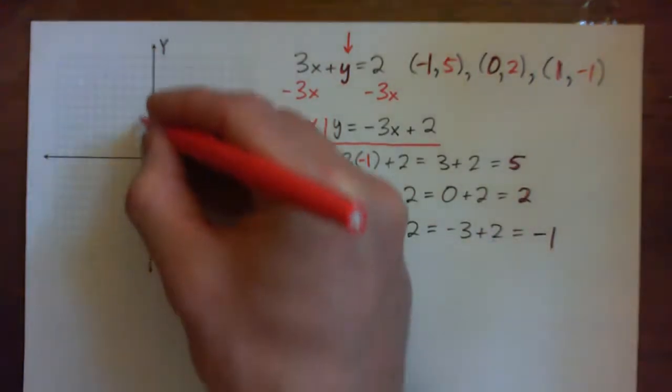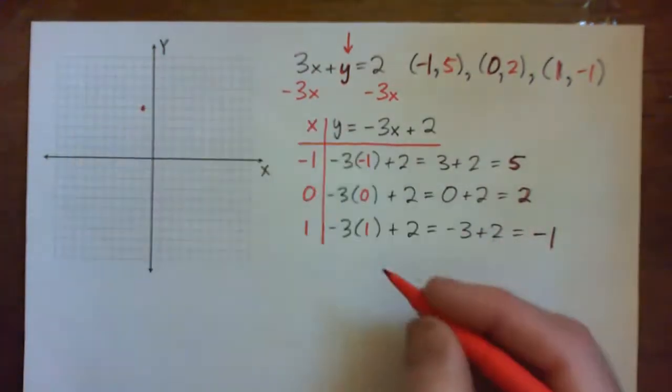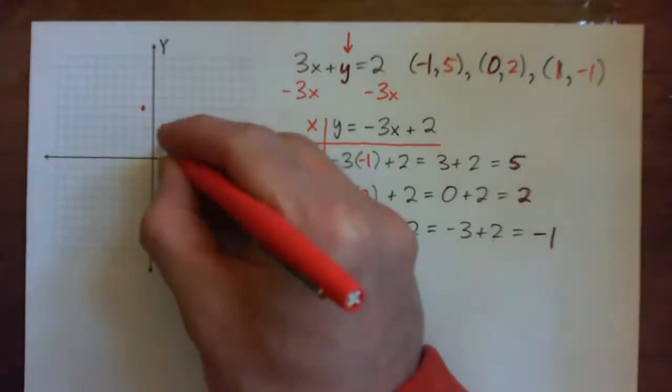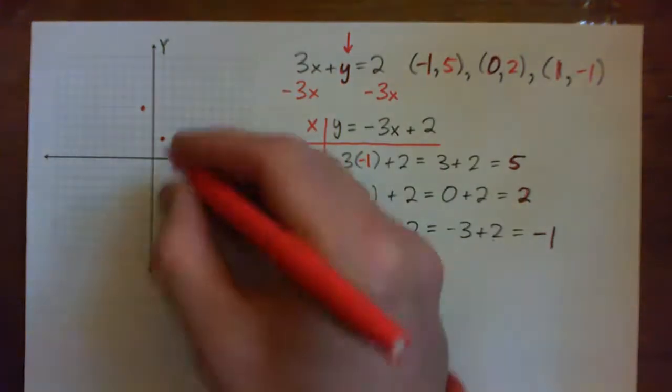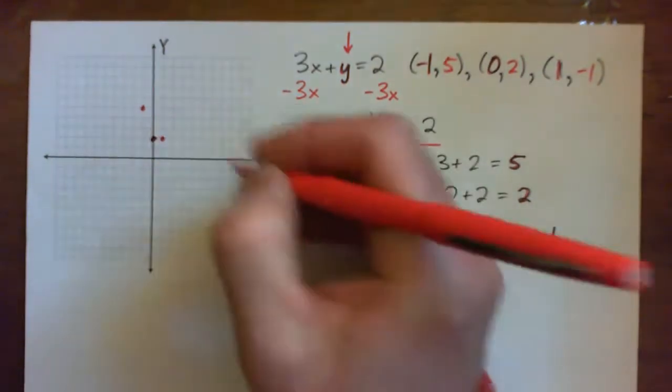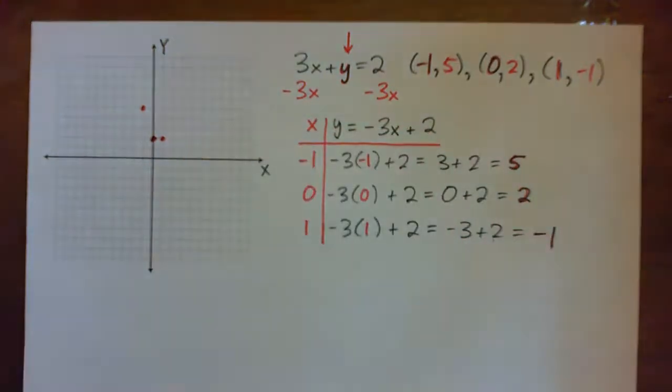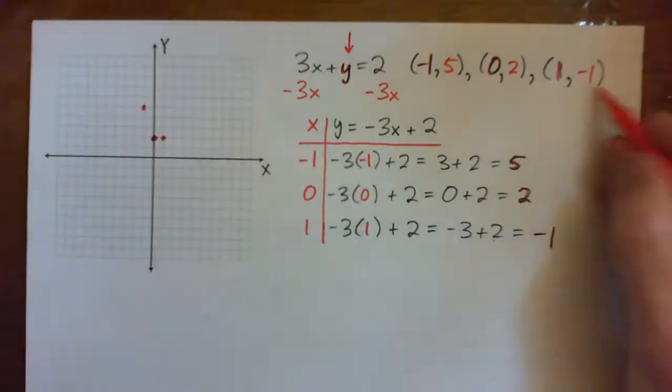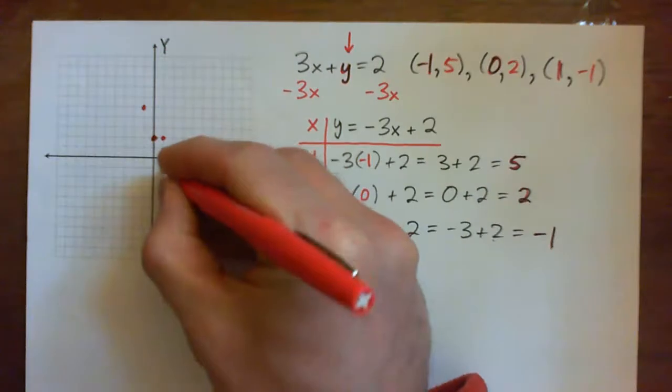So negative 1, 5. And then we have 0, 2. And then we have 1, 0, 2 is over here. And then we have, so we've got one more point. Then we have, so we've got 1, negative 1, which is here.